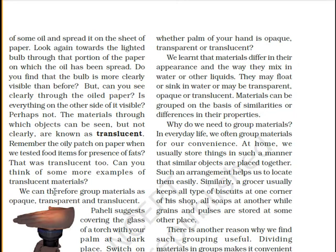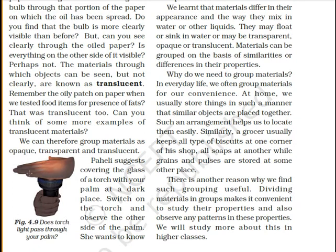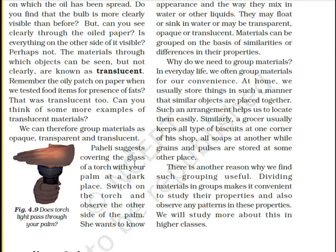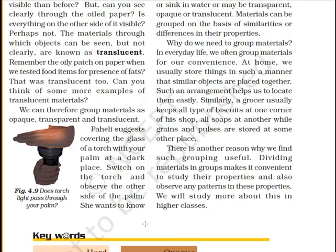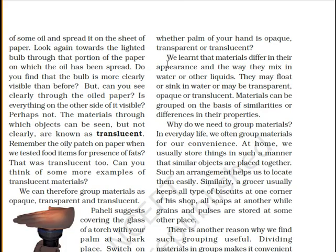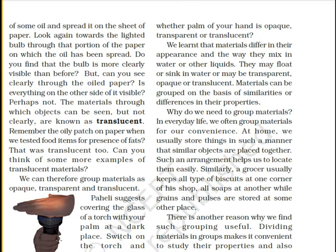Can you think of more examples of translucent materials? Write five examples under the heading 'Translucent materials.' We can therefore group materials as opaque, transparent, and translucent. Try covering the glass of a torch with your palm in a dark place, switch on the torch, and observe. Is your palm opaque, transparent, or translucent? Since part of the light is visible through it, we can say the palm is translucent.